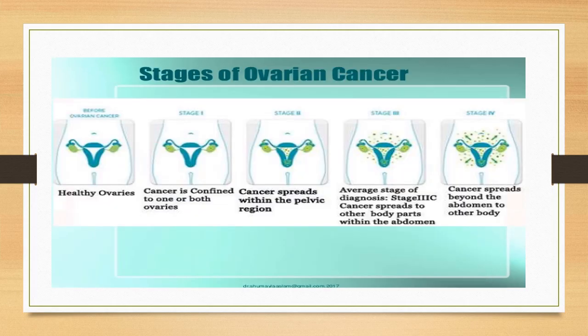Stages of ovarian cancer: stage 1 — cancer confined to one or both ovaries; stage 2 — cancer spread within the pelvic region; stage 3 — cancer spreads to other body parts within the abdomen; stage 4 — cancer spreads beyond the abdomen to other body parts.